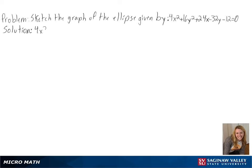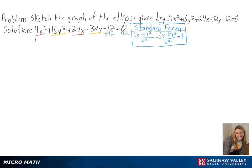Our problem is to sketch the graph of the ellipse given by 4x squared plus 16y squared plus 24x minus 32y minus 12 equals 0. The first part of our solution is to put our equation in standard form as shown.